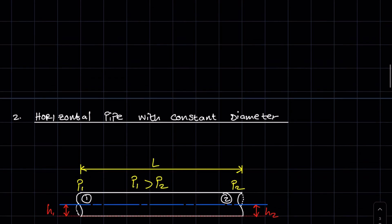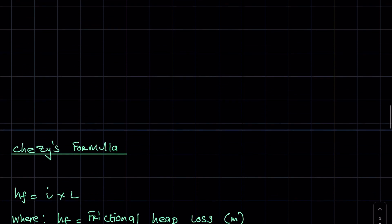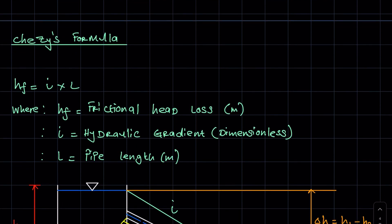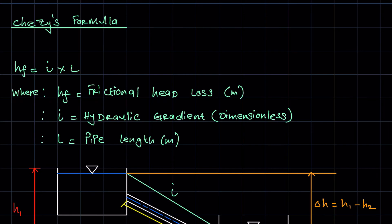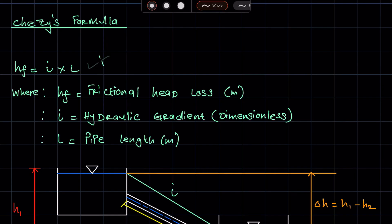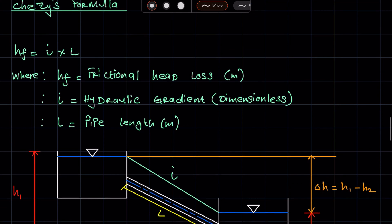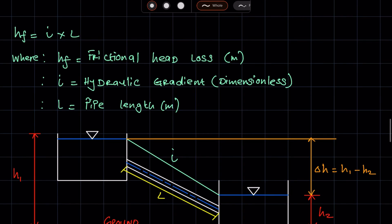Now we are going to look at Chezy's formula. We use Chezy's formula to calculate frictional head losses, just like we did with Darcy's formula — the only difference is the formulas themselves. For Chezy's formula: hf equals i times L, where hf is the frictional head loss in the pipe, i is the hydraulic gradient, which is dimensionless, and L is the pipe length.